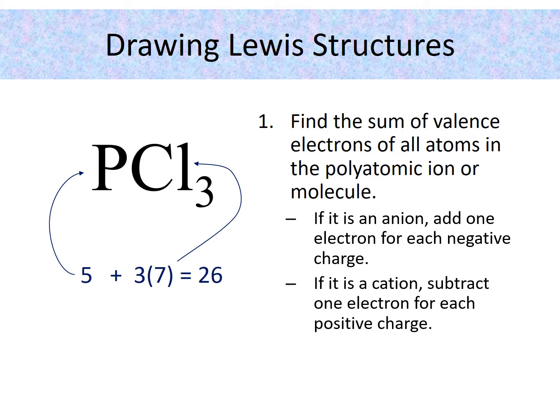Now if it was a cation, then we would need to subtract one electron, because cations means we lose electrons, so we would need to subtract one electron for each positive charge. Again, if it was two plus, that would mean we would subtract two electrons.